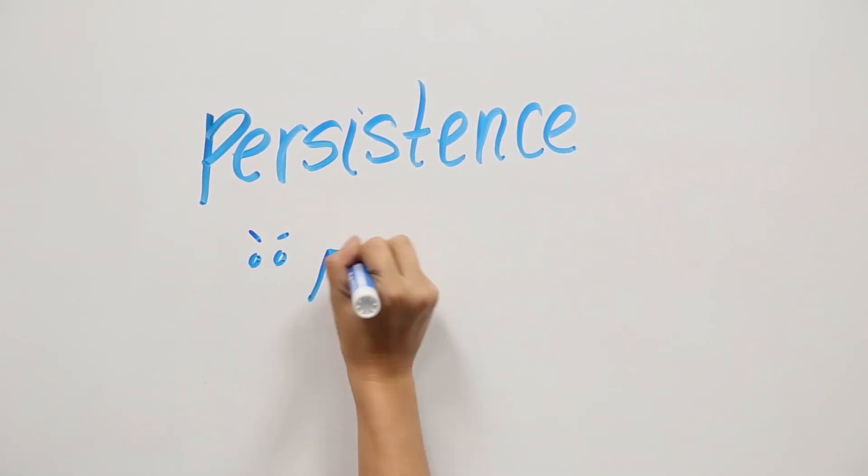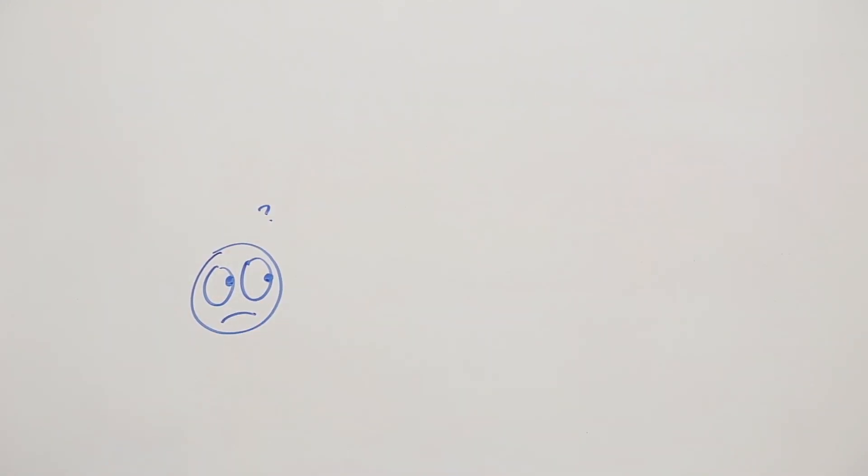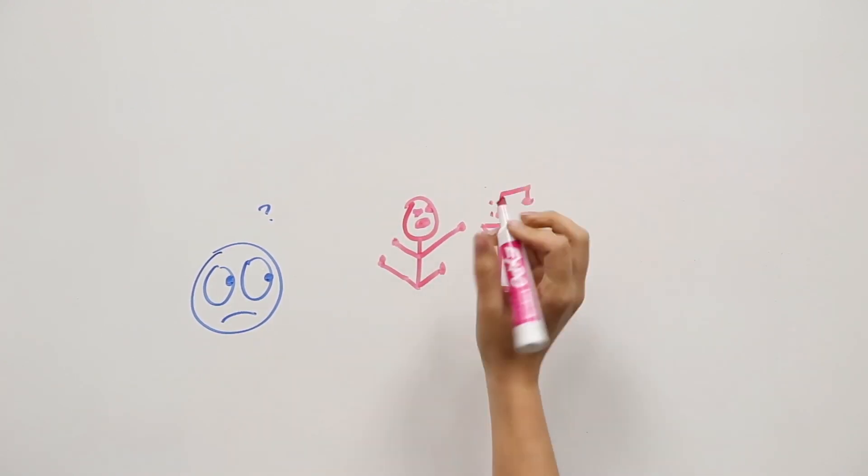In addition to social ability, other components include persistence and sensation seeking. Persistence is the ability to keep attention focused on a task. Introverts tend to be more persistent than extroverts.